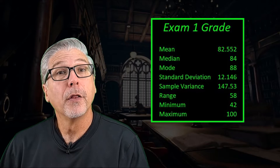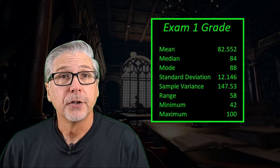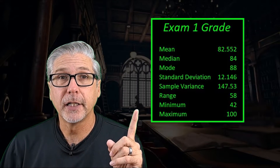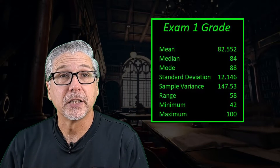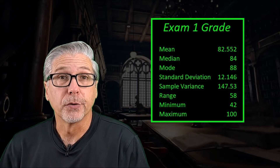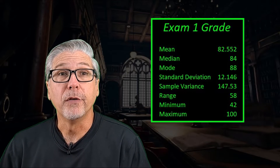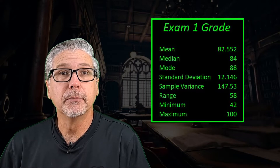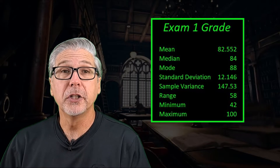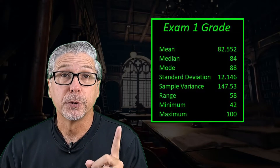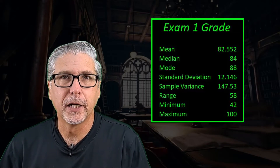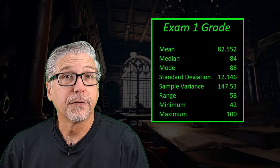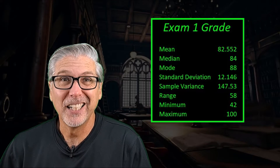Let's start with the easiest one: the range. Much like the mode when we looked at measures of center, the range is really easy to find. We simply take the difference between the largest value in our data set and the smallest value in our data set. In this case, the largest exam score was 100 and the smallest was 42, so the range is 58. The bigger this number is, the farther apart the extremes of the data set will fall. The range does a really good job at looking at the extremes of the data set, but it only considers those two values — and because of that, the range isn't that useful as a measure of variation. Easy to find, but not very useful. Kind of like the mode.